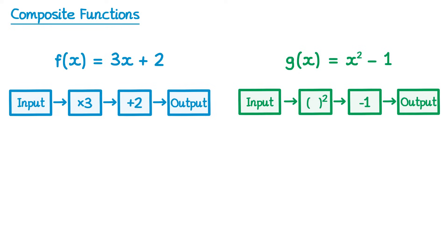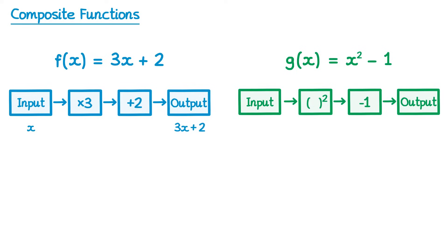Now imagine we took an input x and put it through the first function machine. We times it by 3 to get 3x, we add 2 which gets you 3x plus 2, and then that's the output of the first function machine.